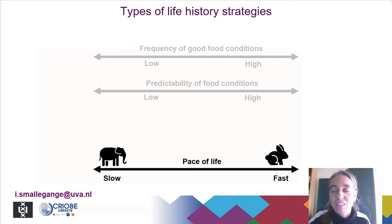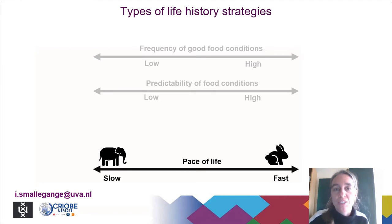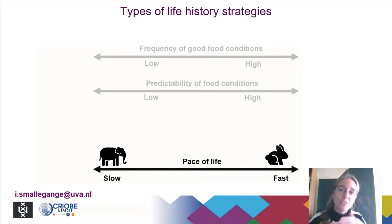Let's look at types of life history strategies. There are different types, but the one I will focus on here is the fast-slow life history speed continuum. On one end are the slow life histories, characterized by low fecundity, very late maturation in life, but high survival. On the fast end of this continuum we have life histories like rabbits, which have very high reproduction rates, mature very young in life, but have very low survival rates.